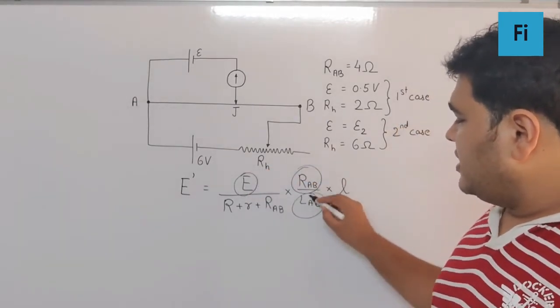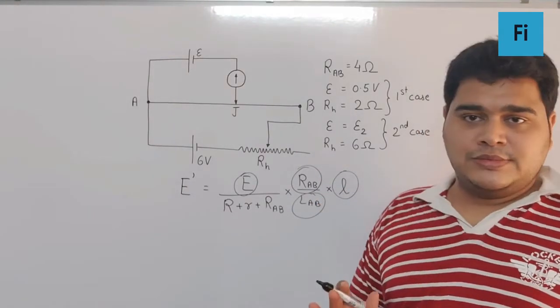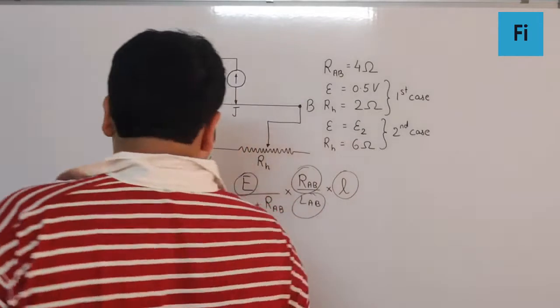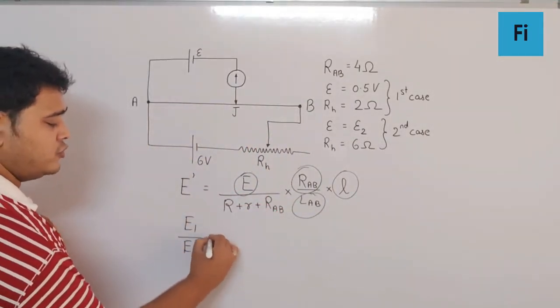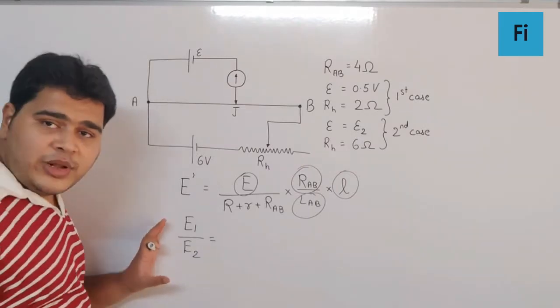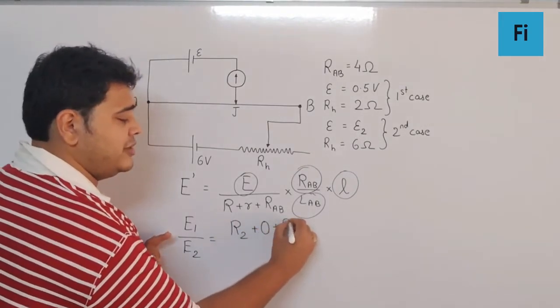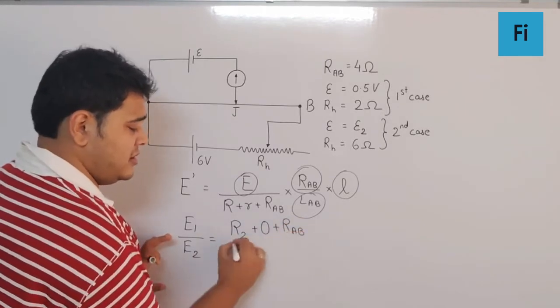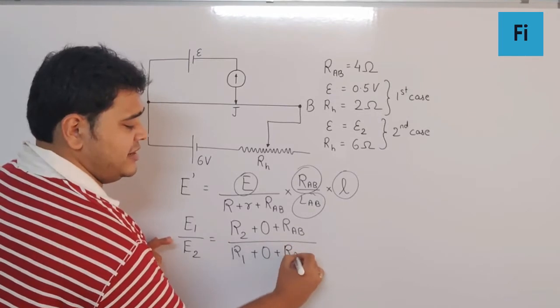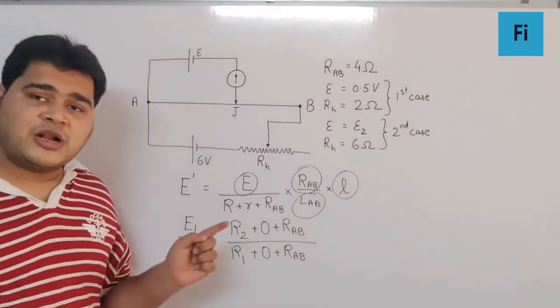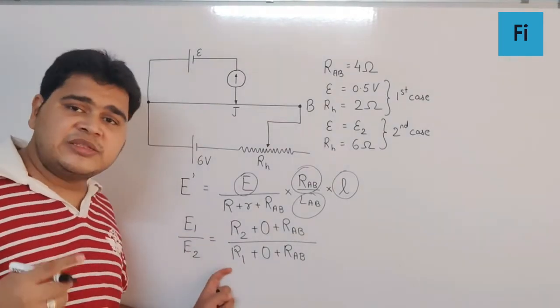E, R_AB, L_AB, and L everything in the ratio will get cut, which means E1/E2 equals (R2 + 0 + R_AB)/(R1 + 0 + R_AB), where R2 is the second case rheostat resistance and R1 is the first case rheostat resistance.